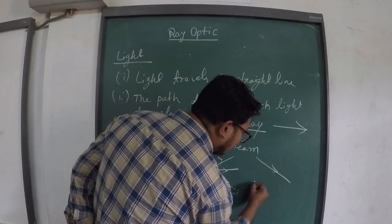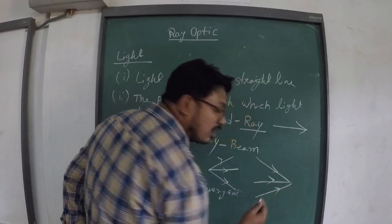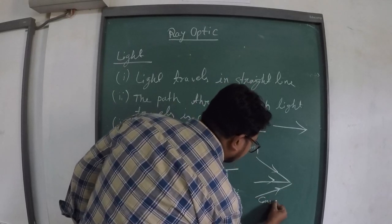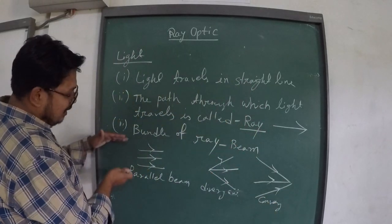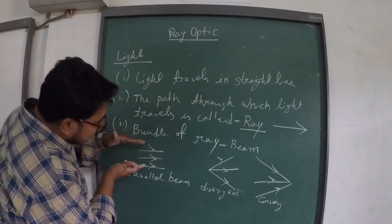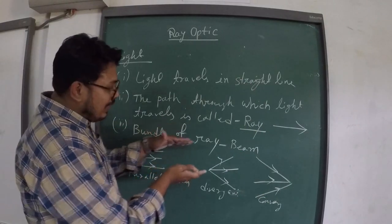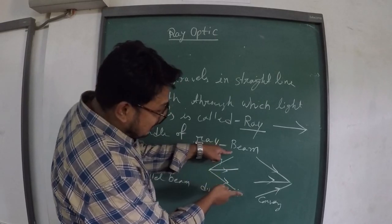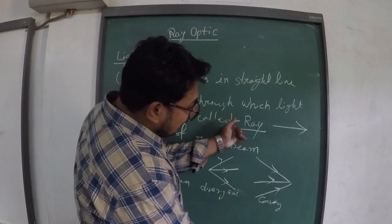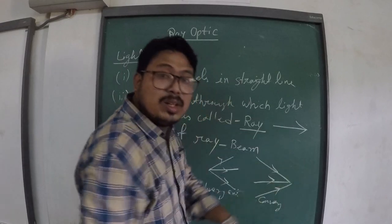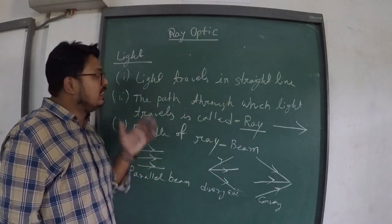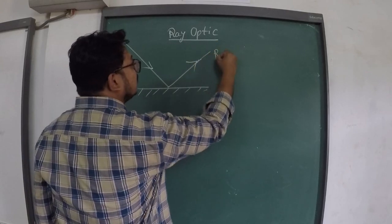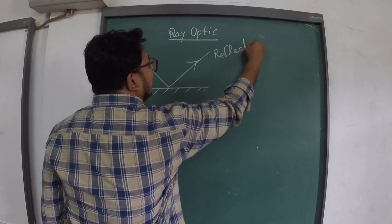If the rays are going to meet at one point, that is called a converging beam. When light falls on a surface, some part of the light will reflect back — that is called reflection. Some part of the light will be absorbed, and some part will pass through — that is called transmission.